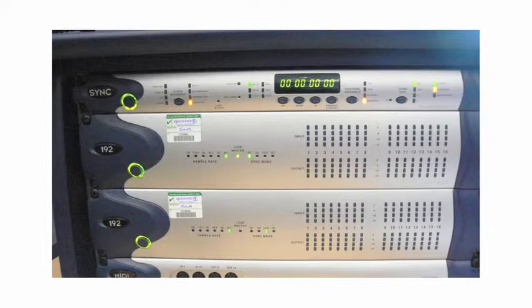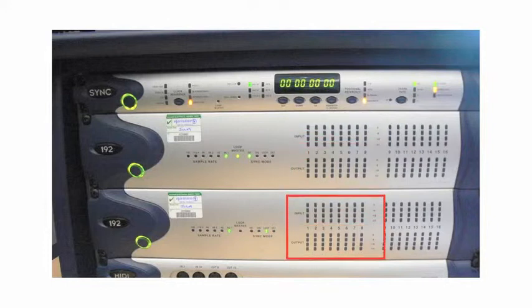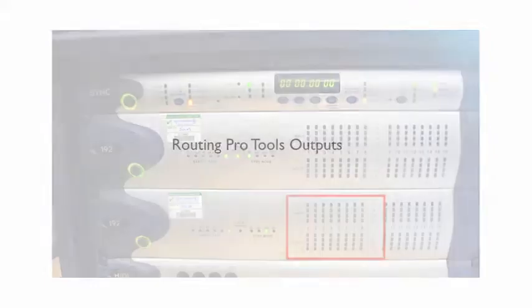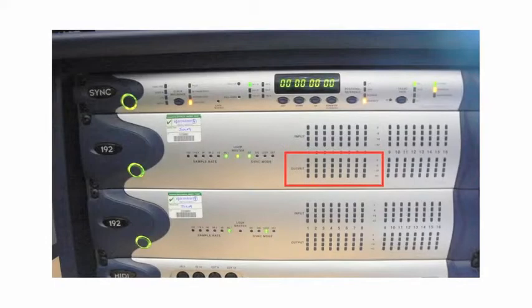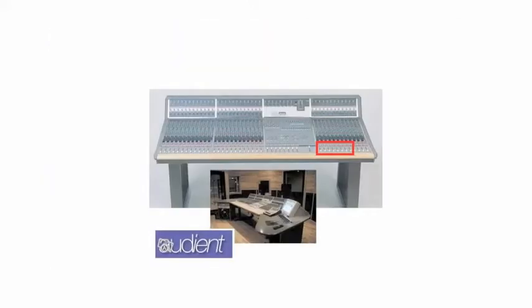In the Audient CB204 there are a total of 16 Pro Tools inputs and outputs. Inputs and outputs 1 to 8 are on the top 192 unit, with inputs and outputs 9 to 16 on the bottom unit. The 8 outputs from the first 192 unit are hardwired into the tape return path for channels 25 to 32 on the right-hand side of the Audient Desk. For example, when you play something in iTunes the left and right output appears on the tape return path for channels 25 and 26, because we are using channels 1 and 2 on the top 192 unit.